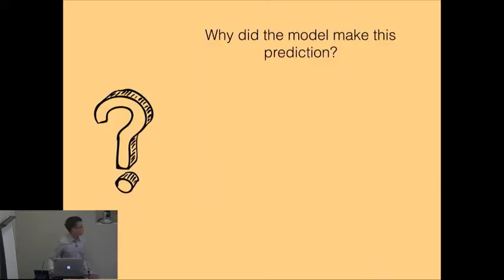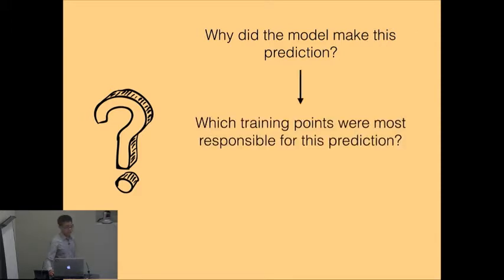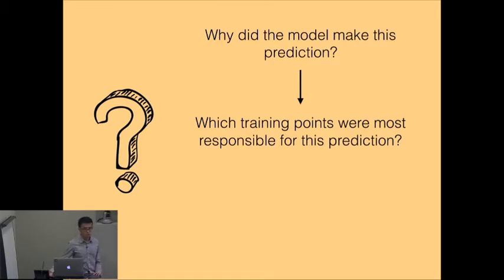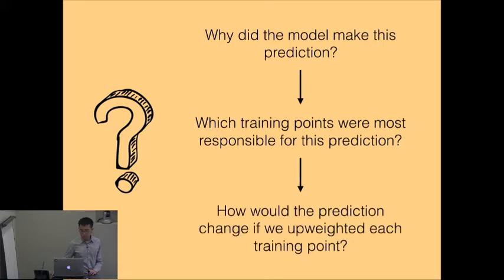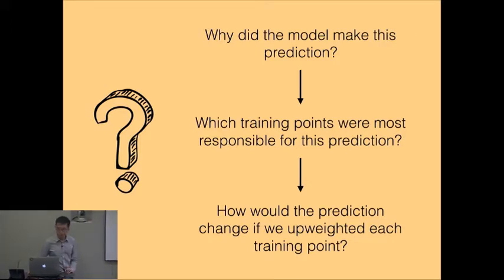Just to recap where we are: we start off with the general question of why did the model make this prediction? We note that the model ultimately comes from the training data, so we can ask which training points are most responsible for this prediction. We try to formalize this by asking the counterfactual: how would the prediction change if we up- or down-weighted each training point?